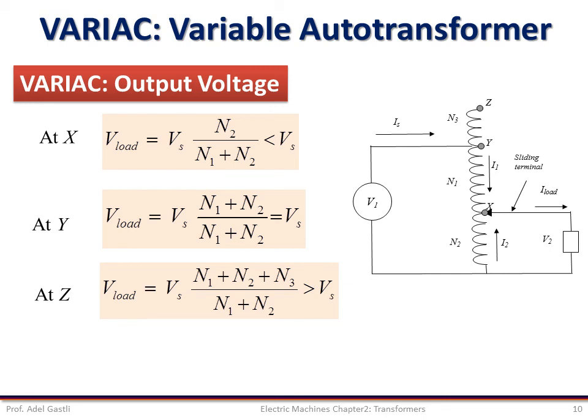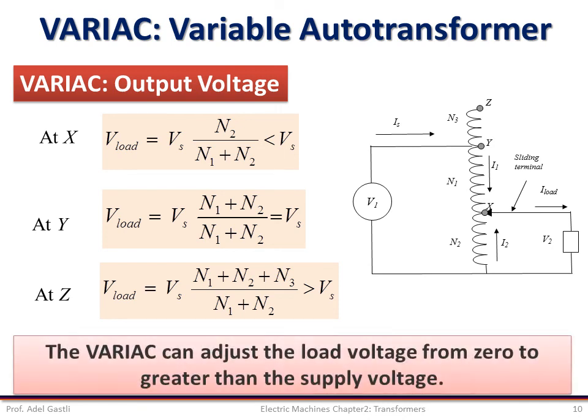But if the secondary taps at point Z, the load voltage can be expressed as the source voltage multiplied by the ratio of the total number of turns N1 plus N2 plus N3 divided by N1 plus N2. And in this case, the load voltage is larger than the source voltage. So, the VARIAC can adjust the load voltage from zero to greater than the supply voltage. It's a large range of variation, which depends on the number of turns, of course, of the winding.